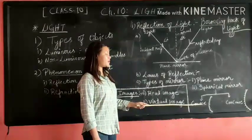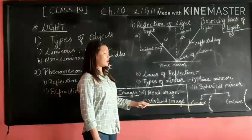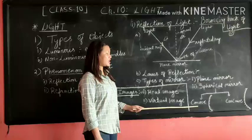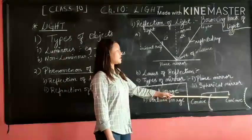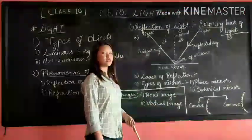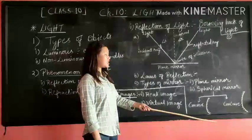Convex mirror. A convex mirror is a curved mirror in which the reflecting surface bulges towards the source of light. Convex mirror is also known as a diverging mirror.